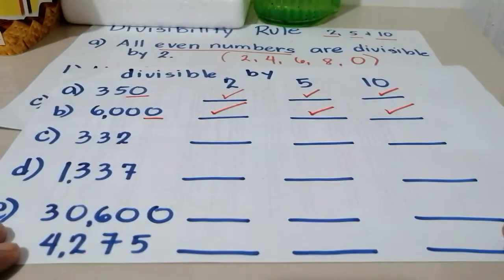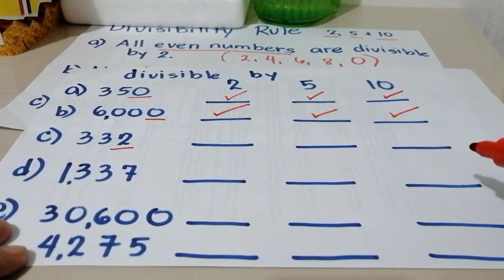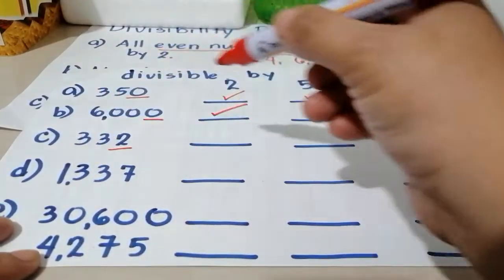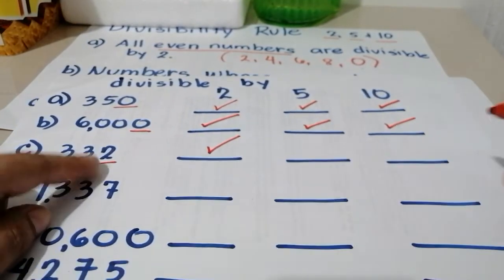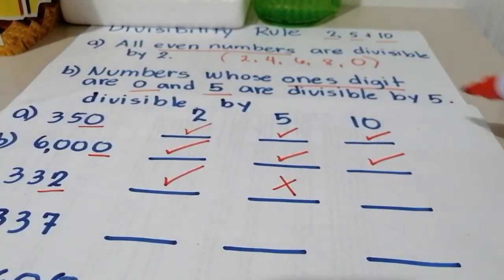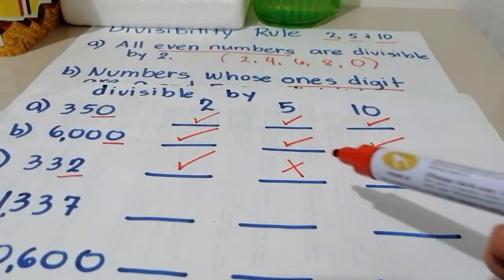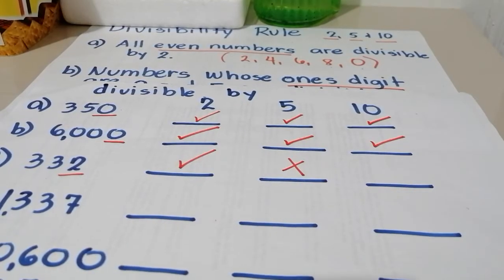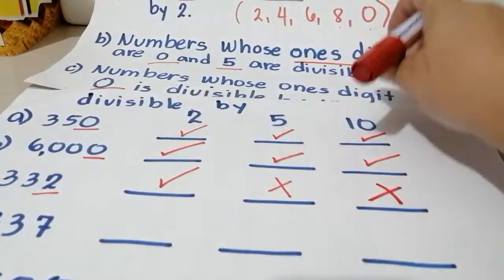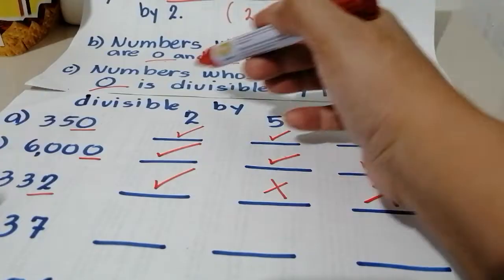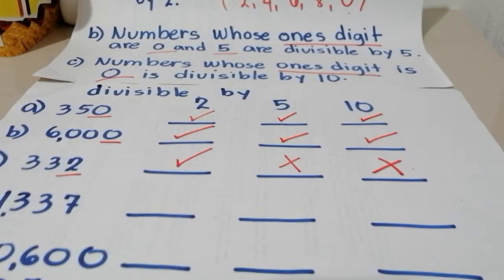Next — 332. What is the ones digit or the last digit? It's 2. 2 is an even number, so 332 is divisible by 2. But then, 2 is not divisible by 5. Why not? Because the ones digit should be 0 or 5 only. Since 2 is not 0 or 5, then it is not divisible by 5. And of course, 332 is not also divisible by 10, because the rule for divisibility by 10 is the ones digit or ending digit must always be 0. Since it's 2, hindi siya 0, so hindi siya divisible by 10.